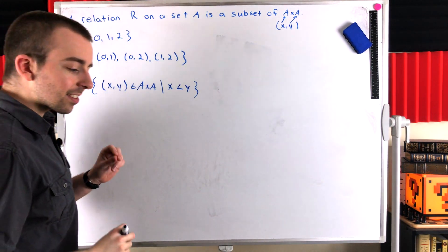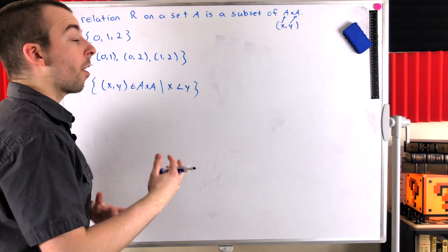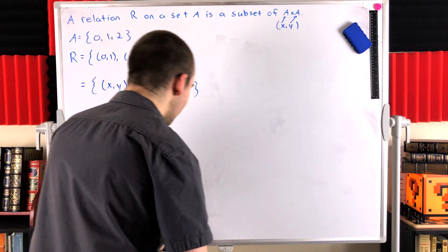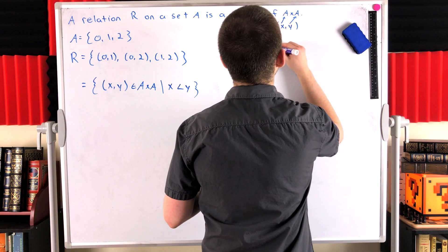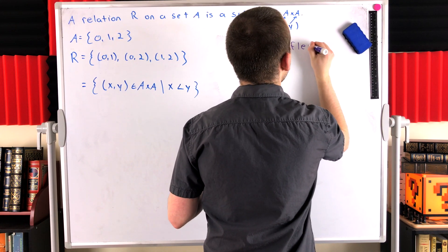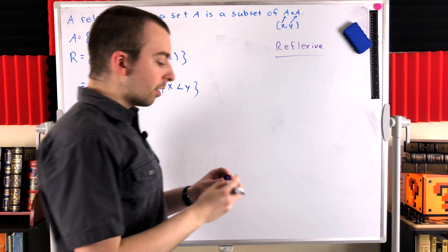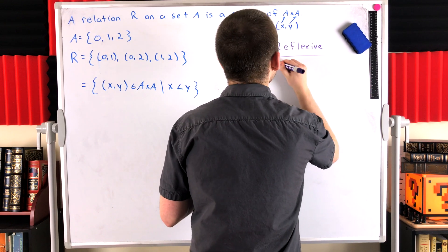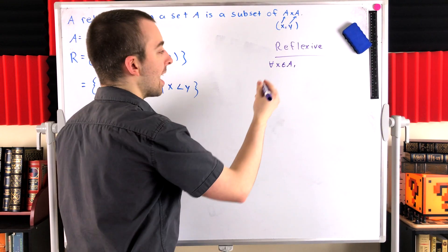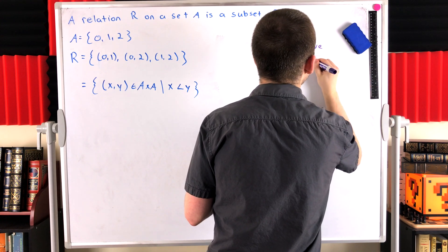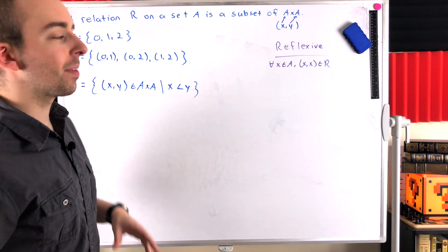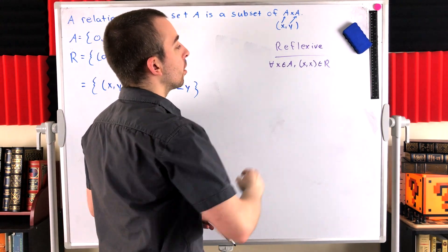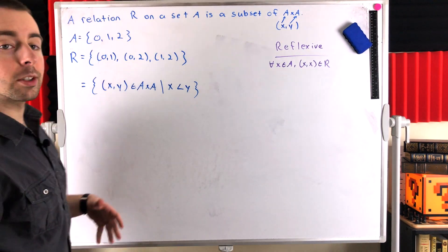Now let's talk about three important properties that we're often interested in when discussing relations — one of them we talked about earlier, the symmetric property. The first one we'll mention is the reflexive property. A relation R on a set A is said to be reflexive if for every element x in A, x relates to itself — so the pair (x, x) is an element of the relation R.